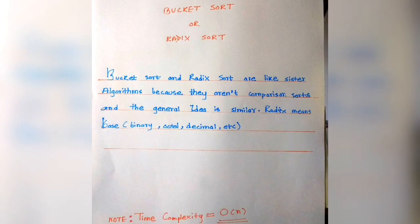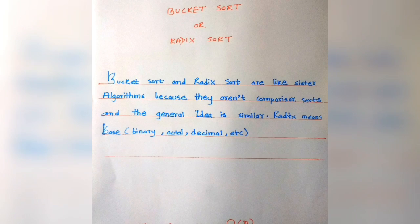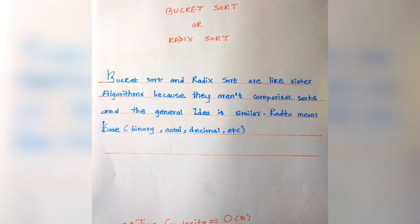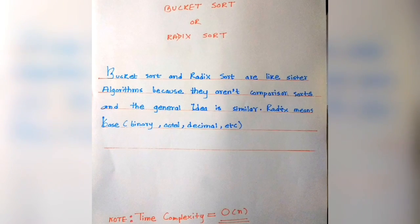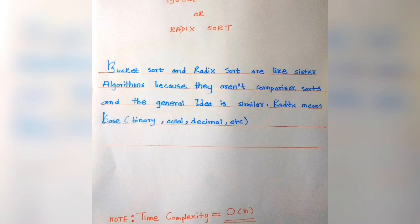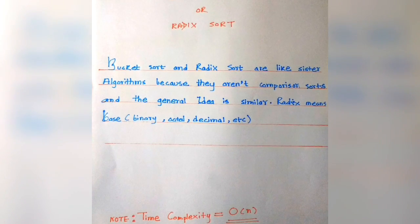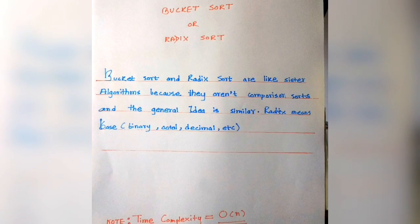Bucket sort and radix sort are like sister algorithms because they aren't comparison sorts. They don't compare each element with one another to sort. But the general idea is similar.